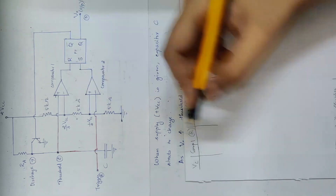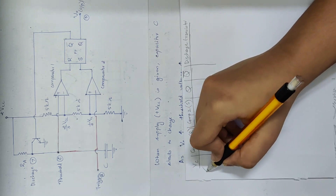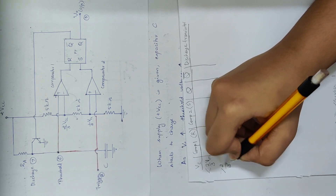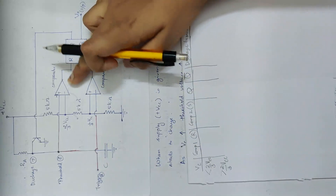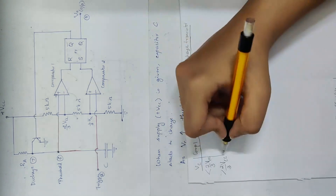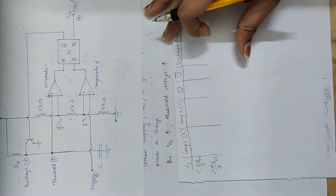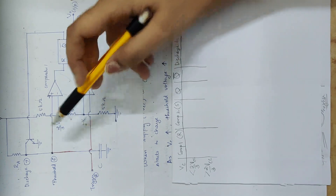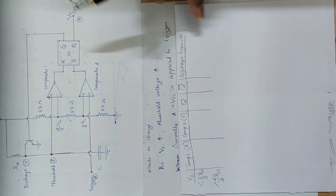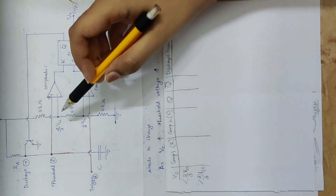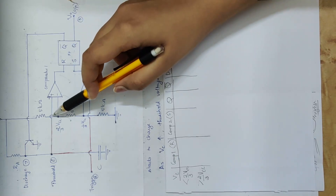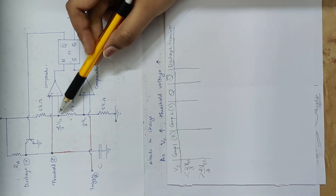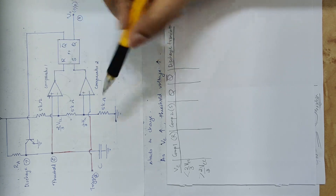The comparator threshold is 2/3 Vcc. When the capacitor voltage is greater than 2/3 Vcc, there is a difference in the comparator output. As Vcc increases, we increase the threshold voltage. If the capacitor voltage is less than 2/3 Vcc, the plus voltage is less than 2/3 Vcc.